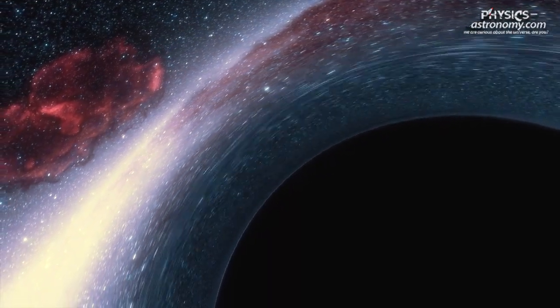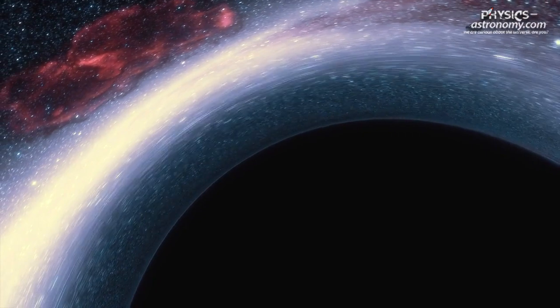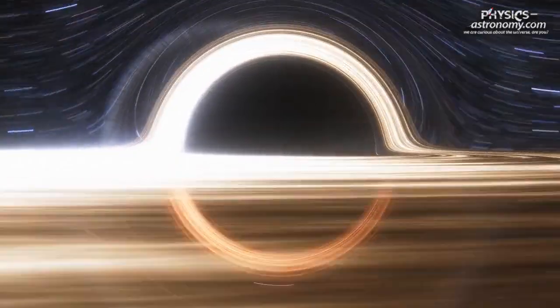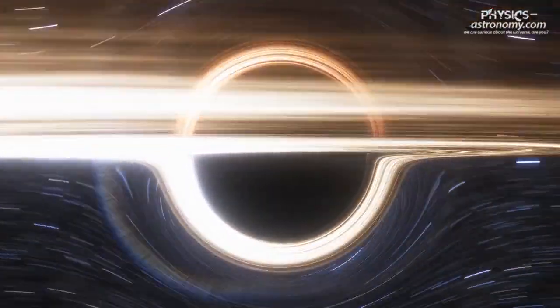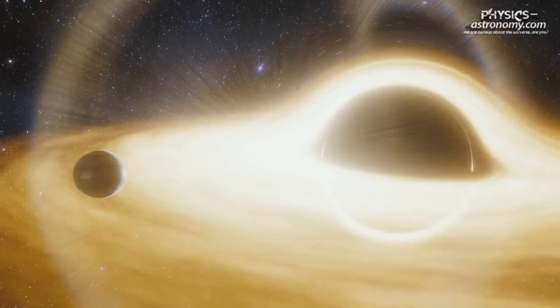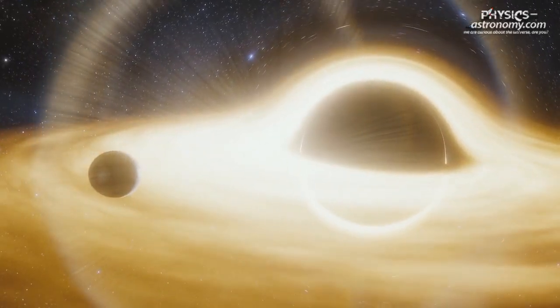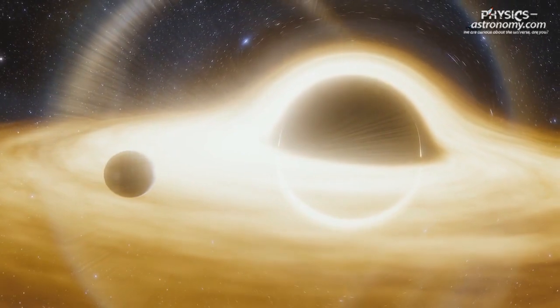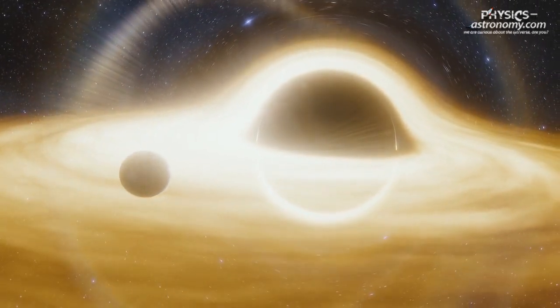The boundary of a black hole is called the event horizon, which marks the point of no return for anything that crosses it. The size of the event horizon depends on the mass of the black hole. For example, a black hole with the mass of the sun would have an event horizon of about 3 kilometers in radius.